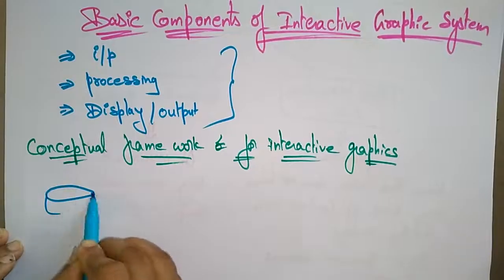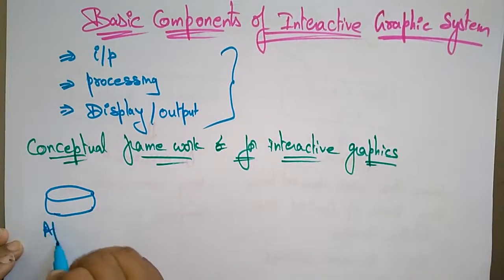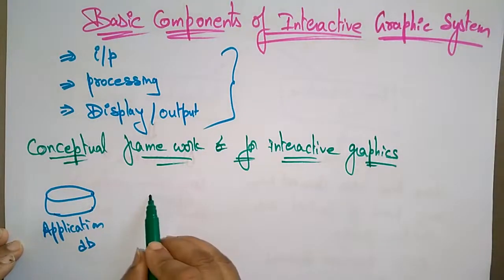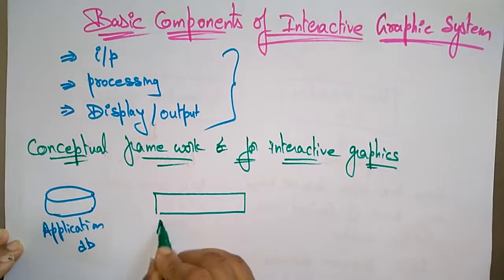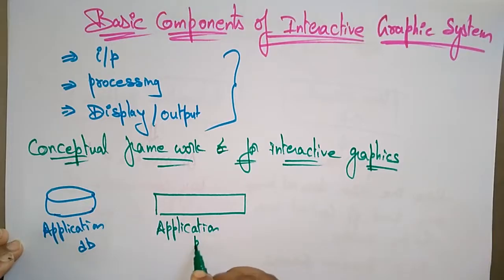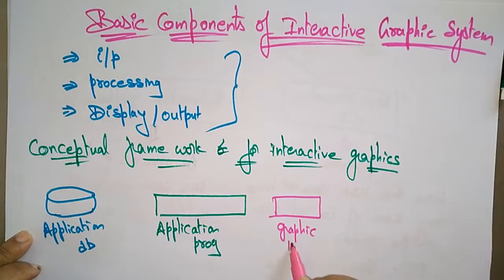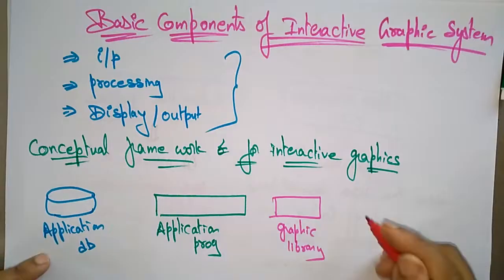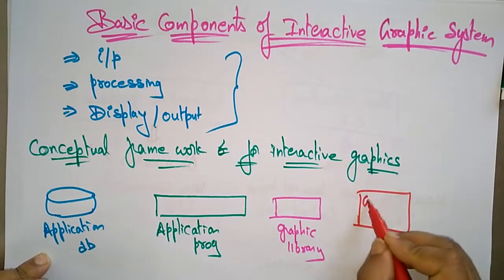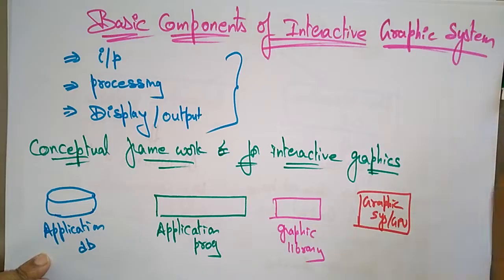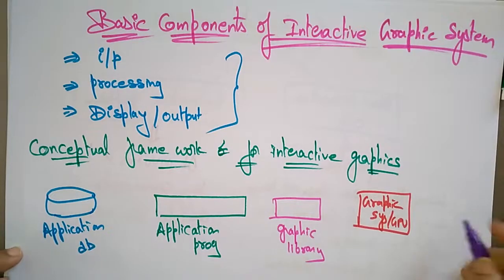Let's take any application database — here is the application database. And here one application program will be there. Then we have the graphic library. And another component is the graphic system, which you can also call the GPU. And still remaining is the system, that is the computer.